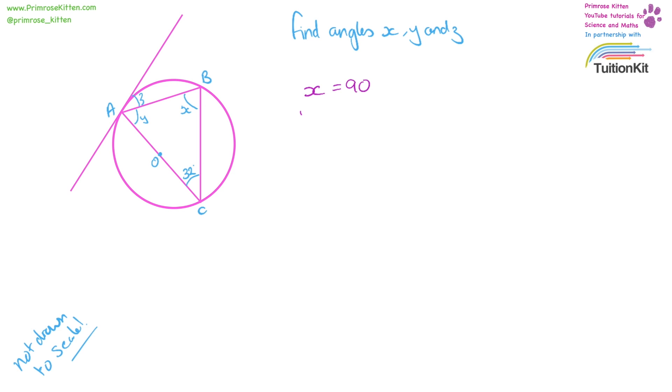Now y, we know that angles inside a triangle add up to 180. If x is 90, the other one is 32, that is going to equal 58.